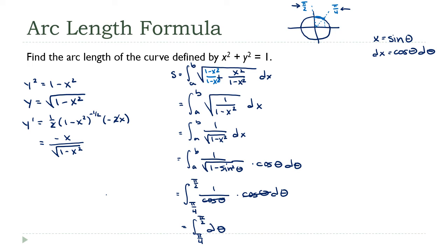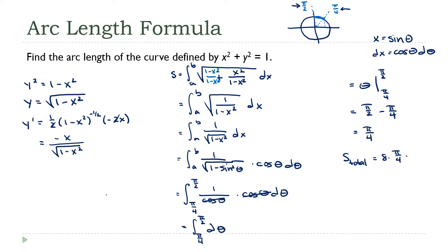That integral is just theta, evaluated from pi over 4 to pi over 2, which is pi over 2 minus pi over 4. Using a common denominator, that's pi over 4. That's an eighth of the circle, so the total circumference is 8 times pi over 4, which is 2 pi — exactly what we expect for the circumference of a unit circle.